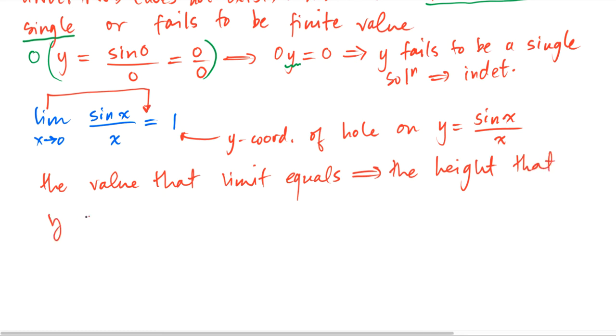Just recall that the value that the limit equals is the height that y approaches. It doesn't make sense to say that the limit approaches 1 — the limit is a value, it's a number. And that value means what height does y approach on that graph.